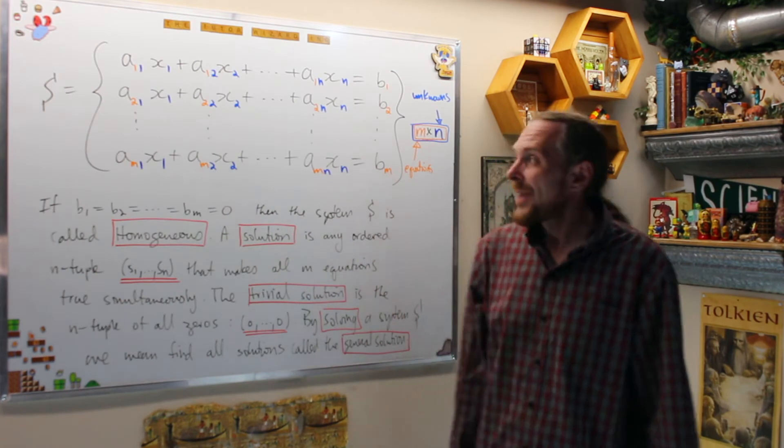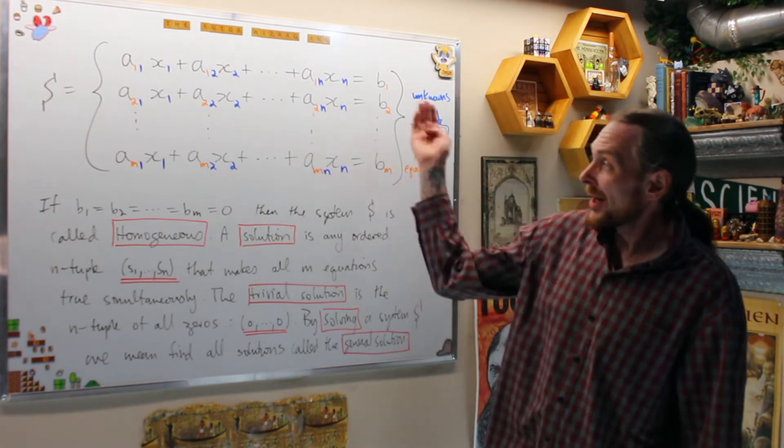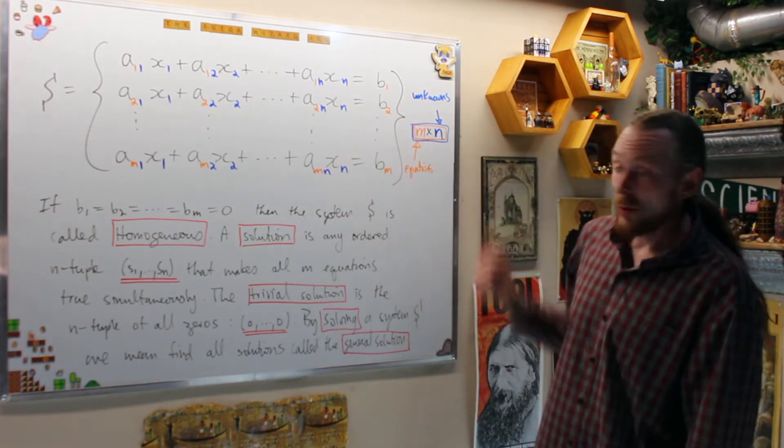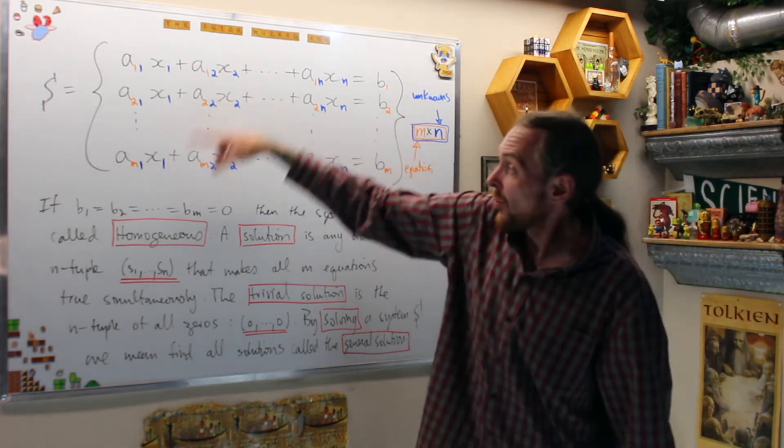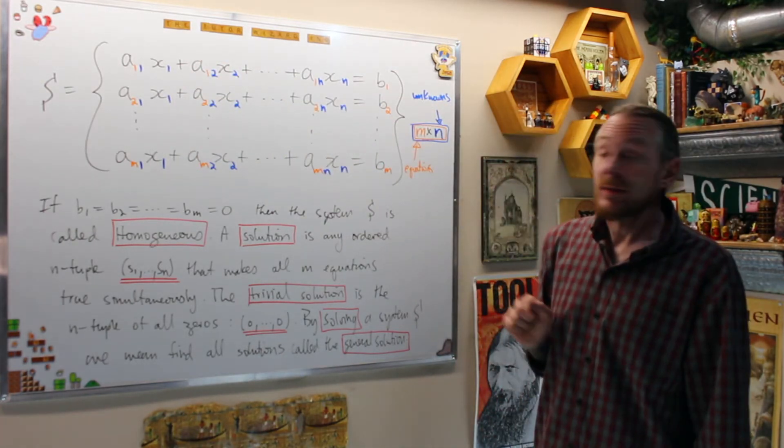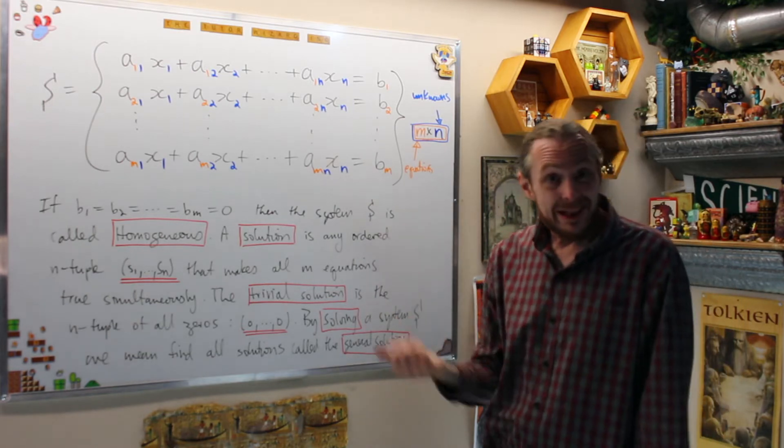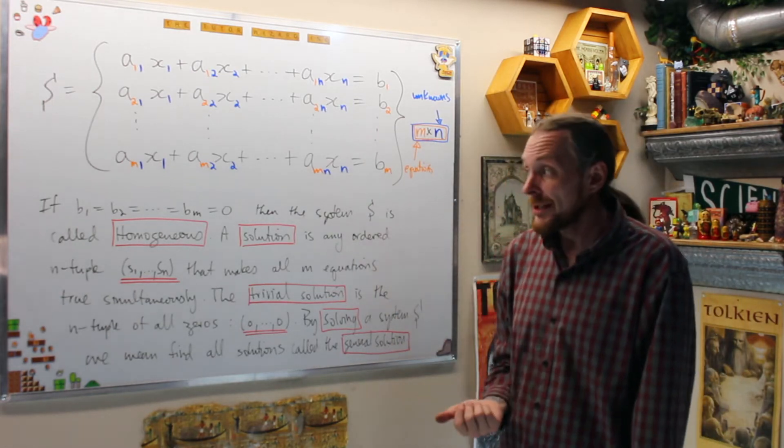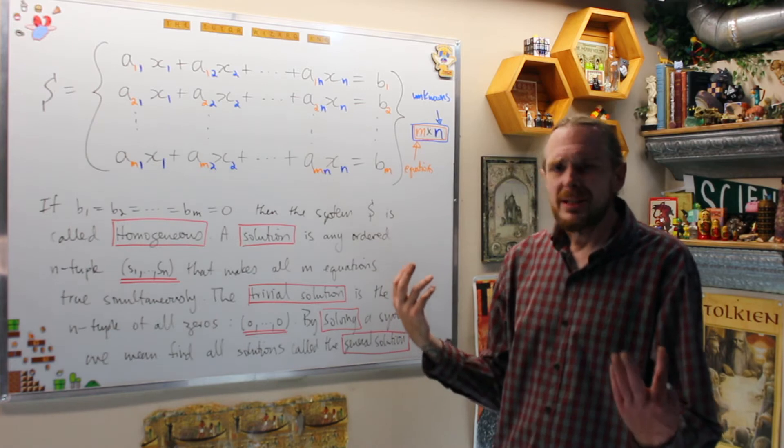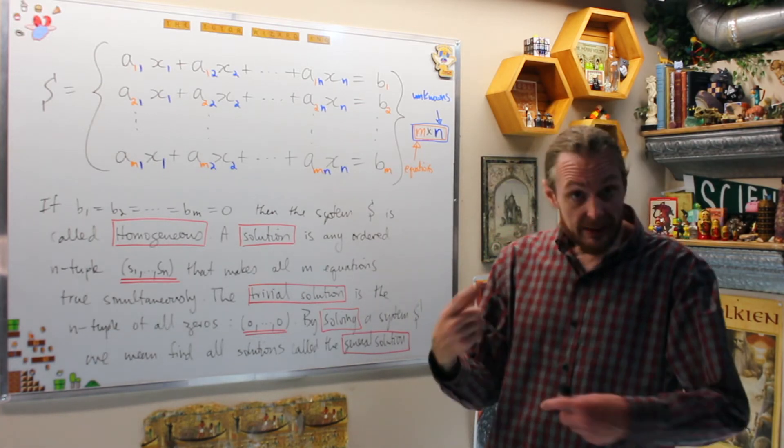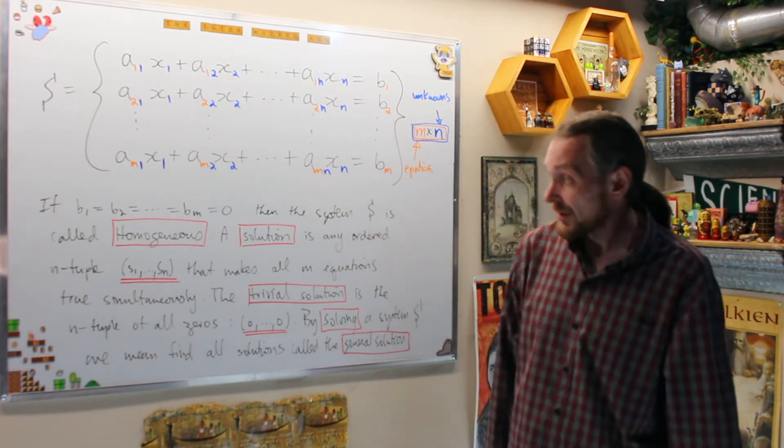This is a linear system S. What we have is M equations, which we have in orange, and N unknowns X1, X2 to XN, which are in blue. This is the general form of what a linear M by N system is going to look like. We have a bunch of terminology, in particular what we mean by solving this or finding a solution. So let's go through that.